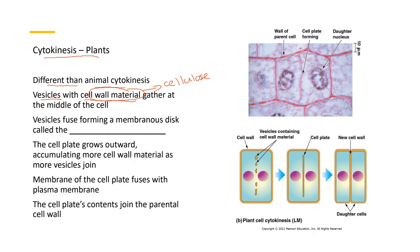So vesicles, they have cell wall material gathered in the middle of the cell. The vesicles fuse. The vesicles are going to fuse together. And vesicles, by the way, what are they made of? They're made of membrane. And we talked a lot about the composition of membranes, right? Phospholipids, etc.